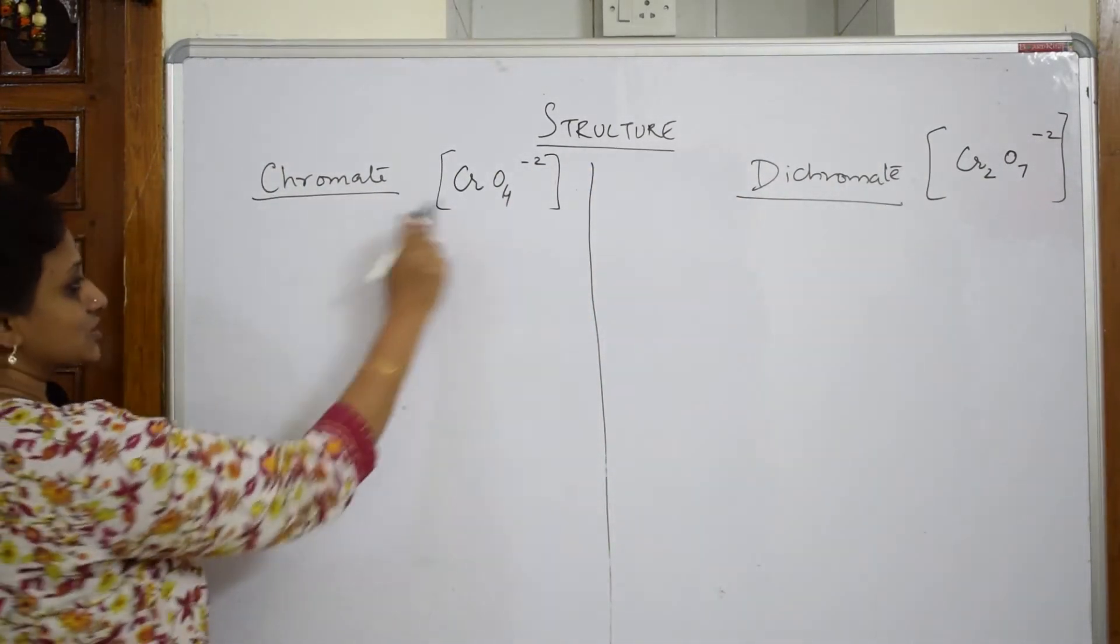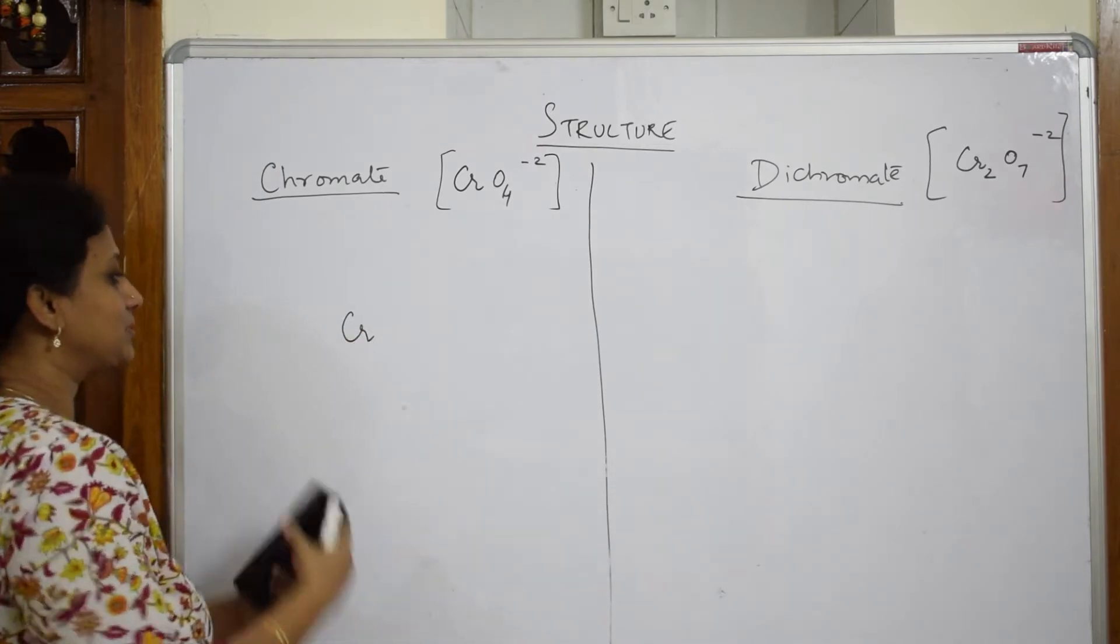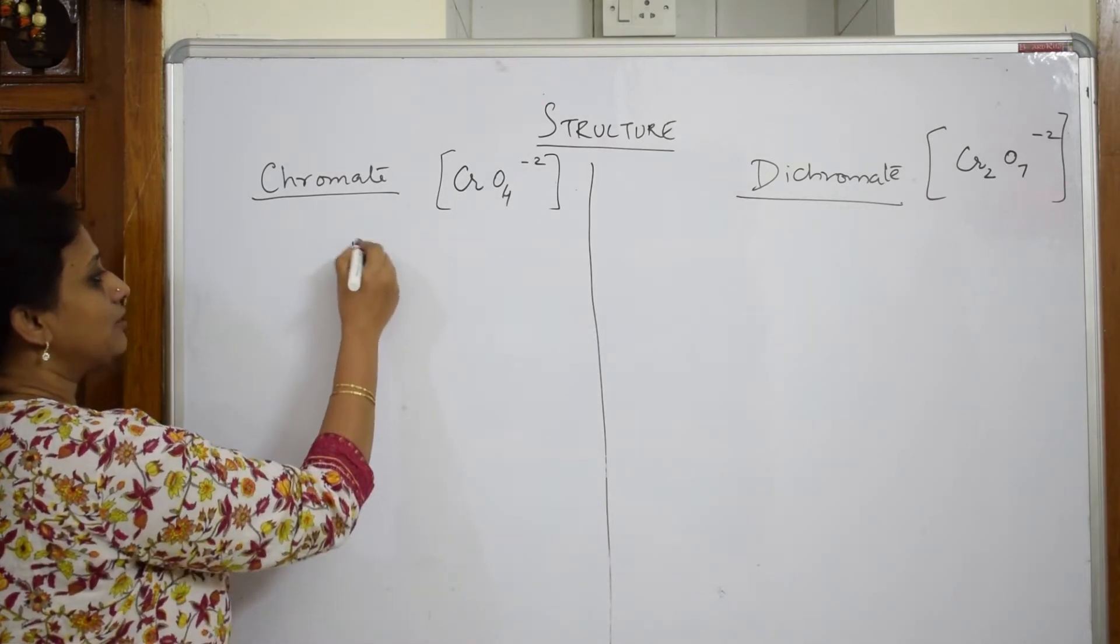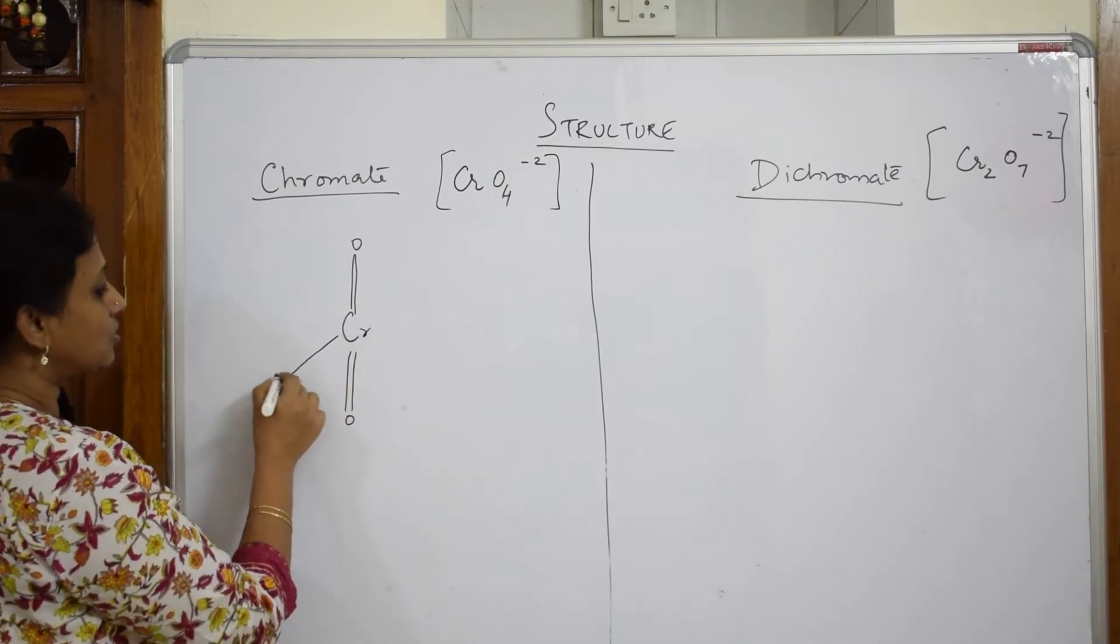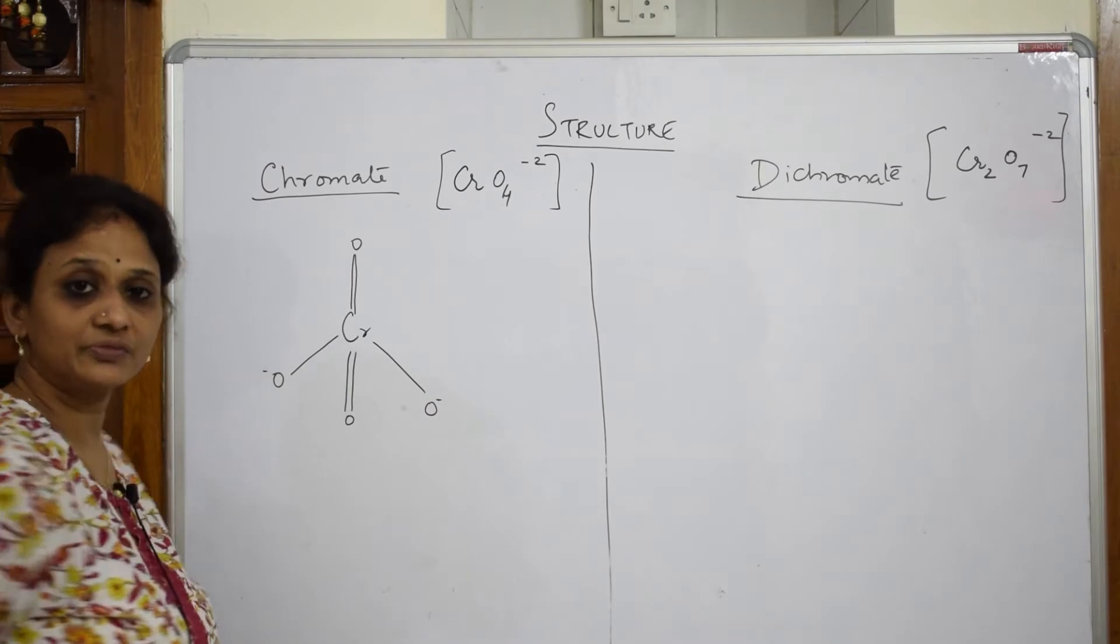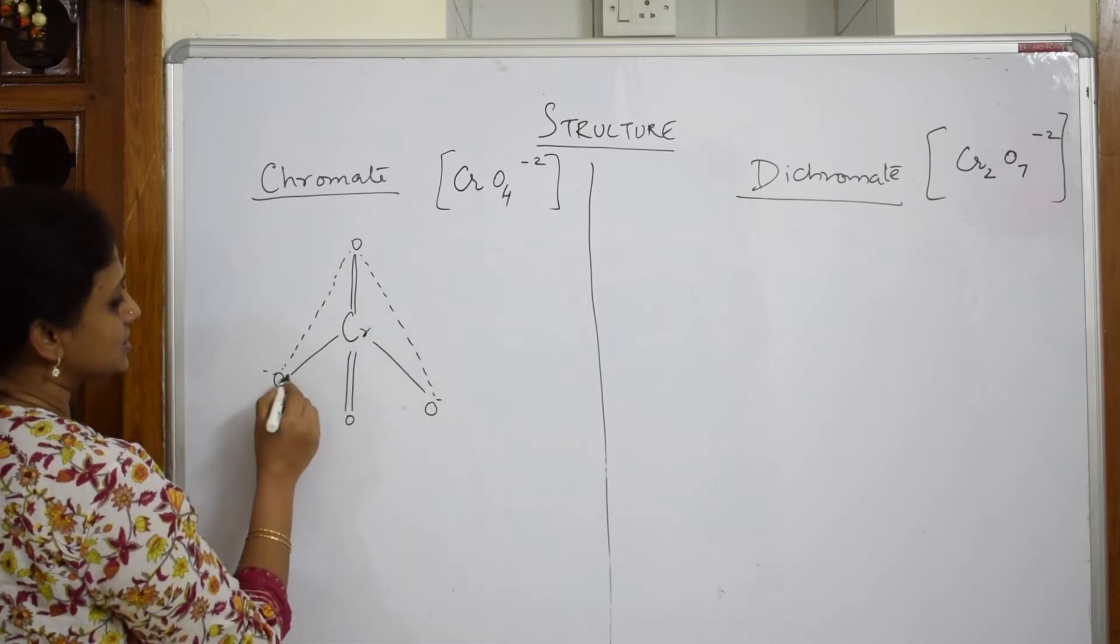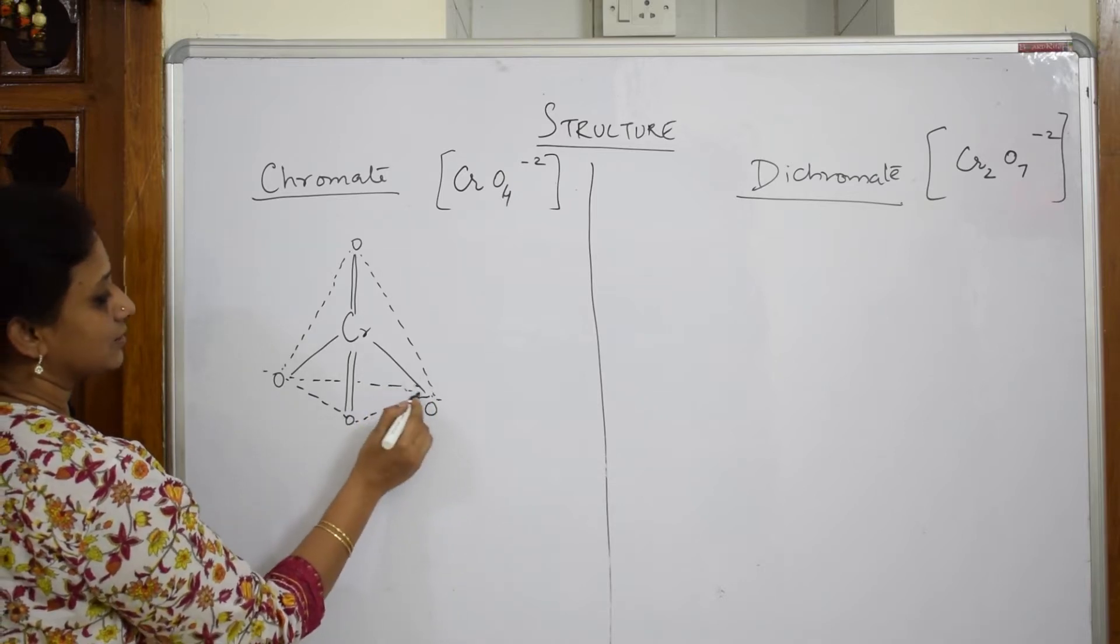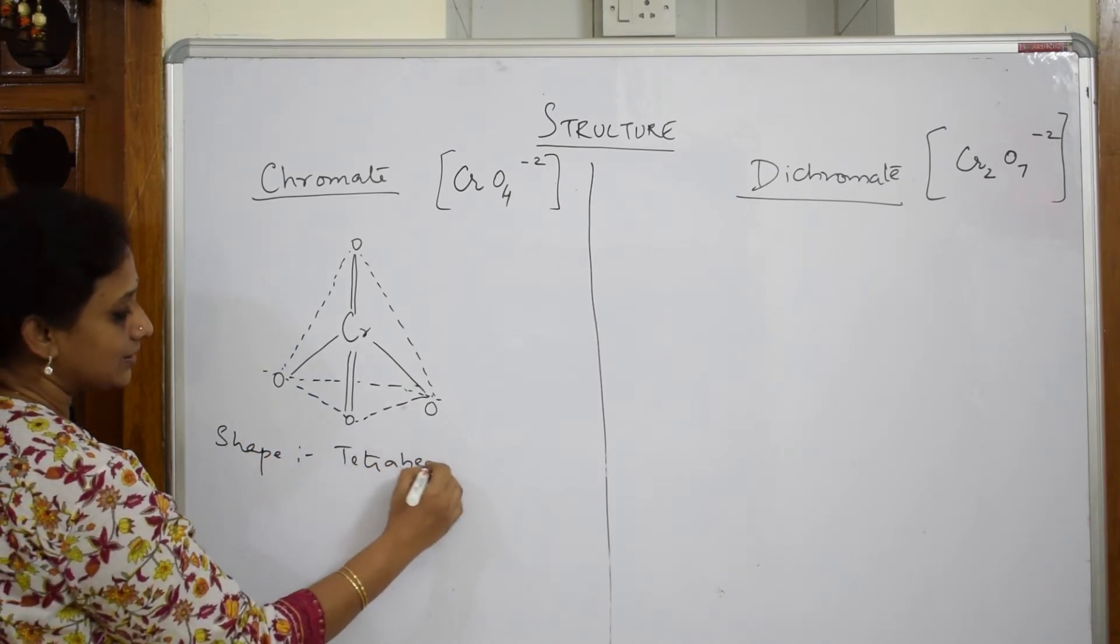So when they have asked me to write the structure, just see, as you have seen, there are four oxygen atoms surrounding chromium. Chromium is a central metal atom. Now you have four oxygen atoms distributed - one above and one below, one more oxygen atom here and one more oxygen atom here. The whole charge, as I said, minus 2. So when I have to join these, it is just looking like a tetrahedral structure. So the shape of the molecule is tetrahedral.